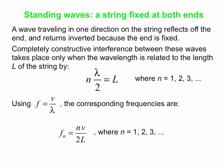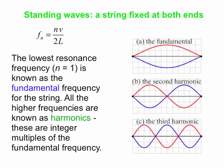So something special happens with waves where an integer number of half-wavelengths fits in the length of the string. Here are examples of what we call the first harmonic at the top, also known as the fundamental; the second harmonic when n equals 2; the third harmonic when n equals 3. The string vibrates back and forth between the outline shown in red and the outline shown in blue.